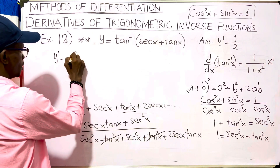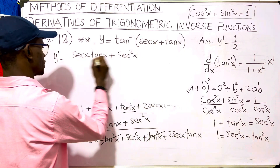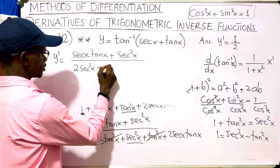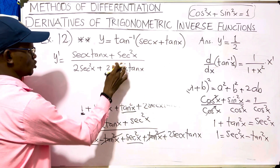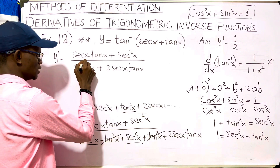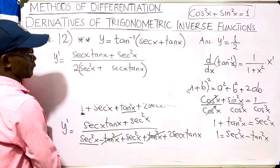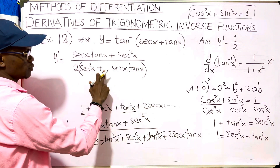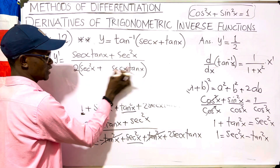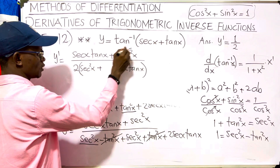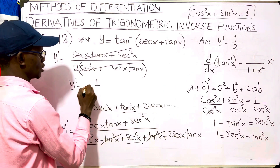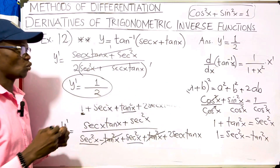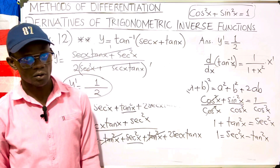We now have y prime equals secant x tangent x plus secant squared x, divided by two secant squared x plus two secant x tangent x. Factoring out 2 from the denominator gives 2 times the quantity secant squared x plus secant x tangent x. The numerator secant x tangent x plus secant squared x is the same expression as the denominator's factor, so they cancel. Therefore y prime equals one over two. So y prime equals 1/2 — and that is the beauty of trigonometric inverse functions. Thanks for watching, see you in our next lecture.